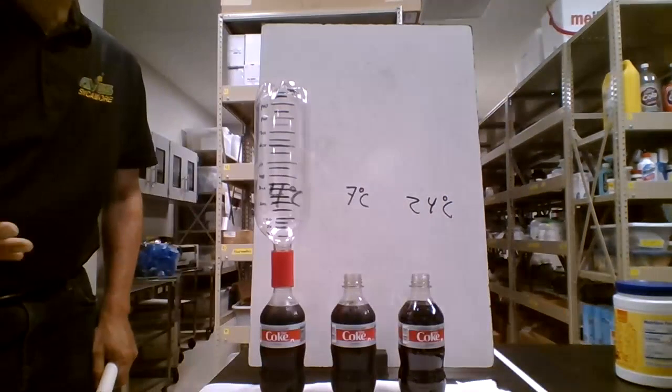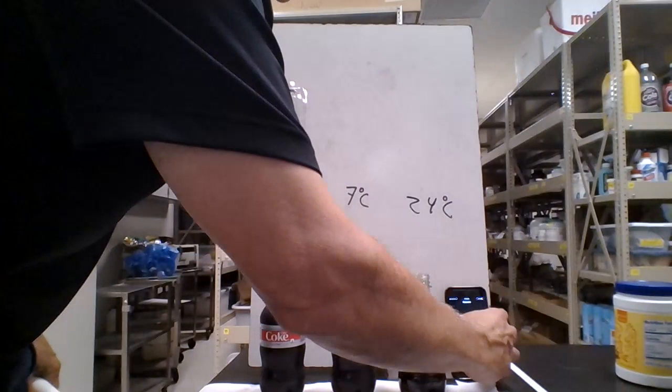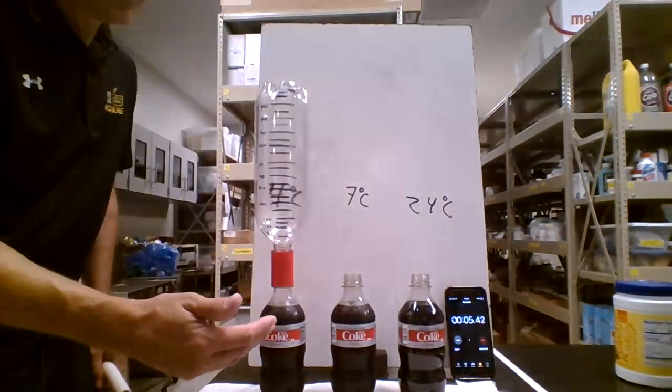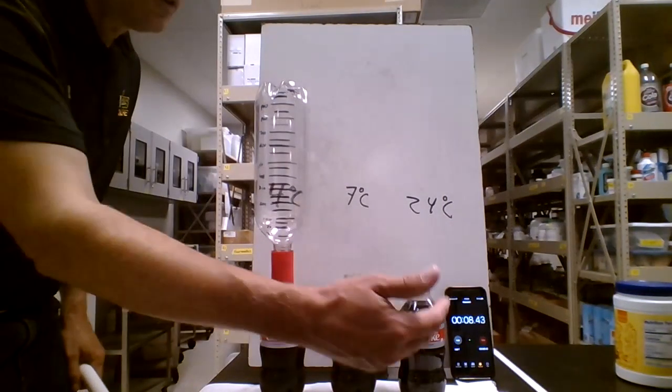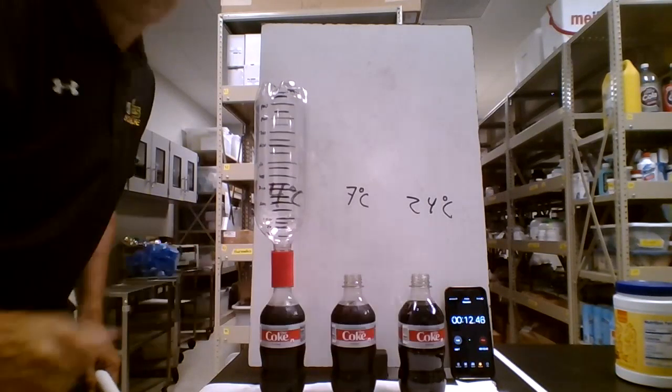Second, if you notice, I have three Diet Cokes, all at different temperatures. This one is at 4 degrees Celsius. This one is at 7 degrees Celsius. This one is at 24 degrees Celsius. And we also have the clock going.